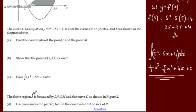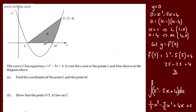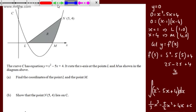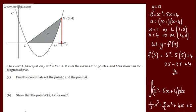We're told the finite region R is bounded by LN, LM, and the curve C as shown in figure 2. In part D, it says use your answer to part C to find the exact value of the area of R. I'm going to consider this as the area of a right-angle triangle minus the area trapped under the curve between M and N.